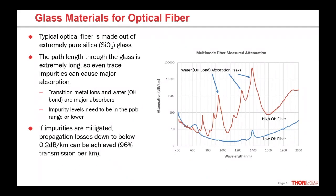Typically for fiber applications, metals are under one part per billion and water is at least under 10 parts per billion. The graph here shows fiber attenuation versus wavelength — one fiber with very low OH content and one with slightly higher water content — and you can see all these absorption peaks caused by even a very slight impurity. If we can mitigate these impurities, we can achieve losses as low as 0.2 dB per kilometer, which means roughly 96% transmission per kilometer. As an analogy: if ocean water was as pure as fiber glass, you could stand on a ship in the middle of the Atlantic or Pacific where the ocean is miles deep, and see right to the bottom — that's how pure the glass is.